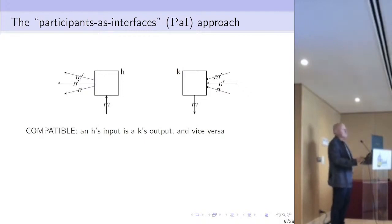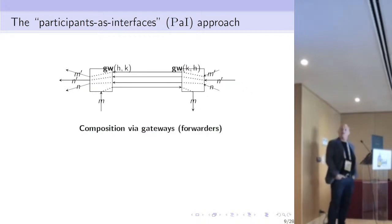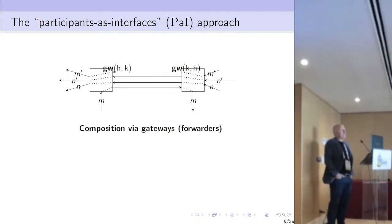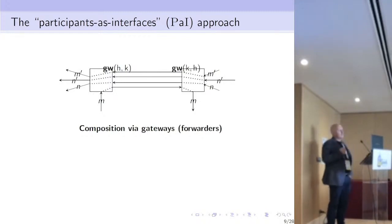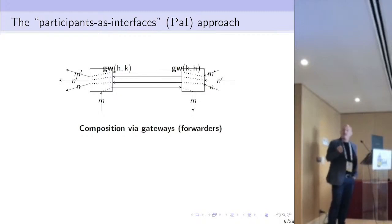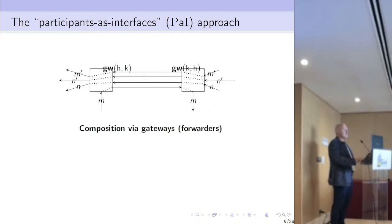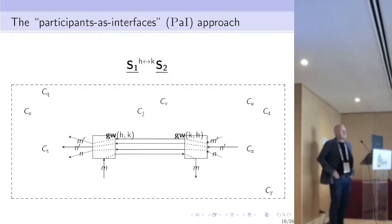So we connect the two systems in a very simple way by replacing the two participants with gateways — simple forwarders. The message M that H received is now forwarded to the other component and used as the message that component K could send to the rest of its partners. The composition is simply obtained in this way.